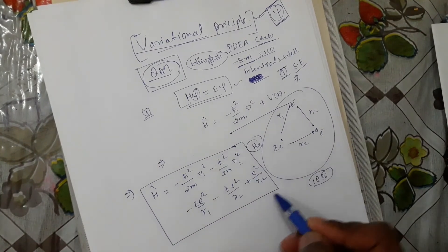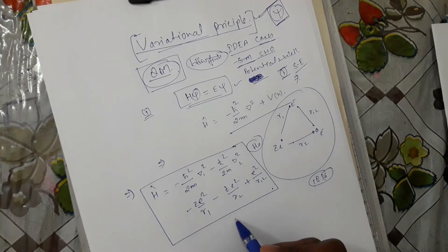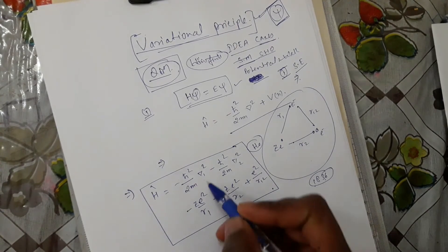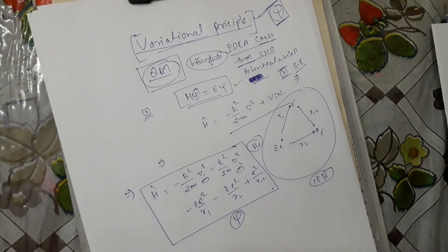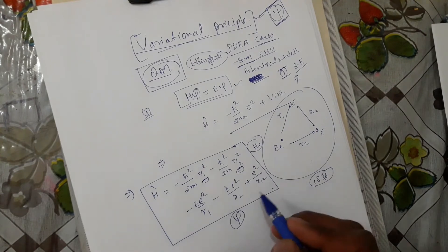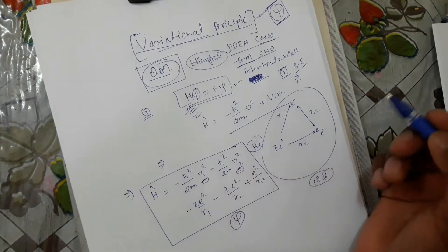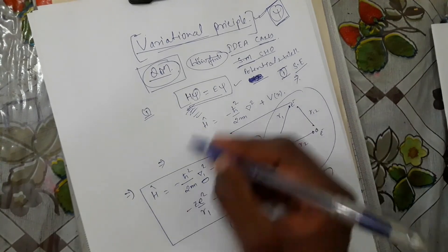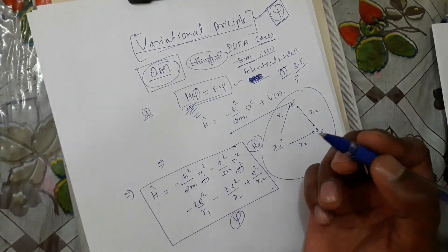If you put this H into the Schrödinger equation, you will not be able to find the solution — it is very complicated because there are three variables for each electron, giving six variables total. These are partial differential variables and it is too difficult to solve. You would be famous if you solved this equation exactly!